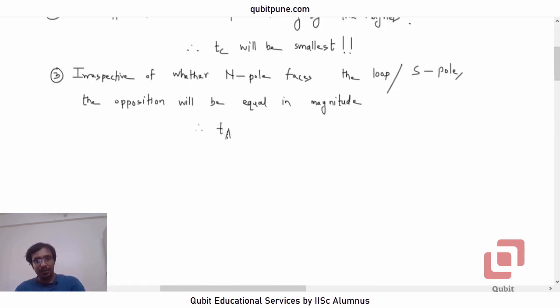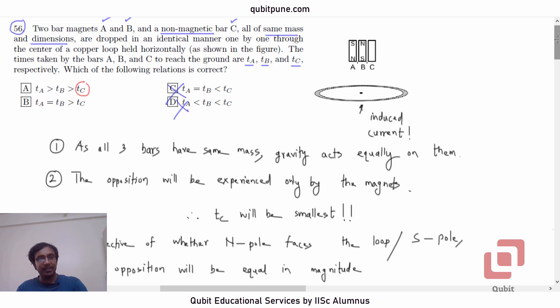Therefore, TA will be equal to TB. TA equal to TB greater than TC. That is the option. TA equal to TB greater than TC is the option. So, correct option is B.